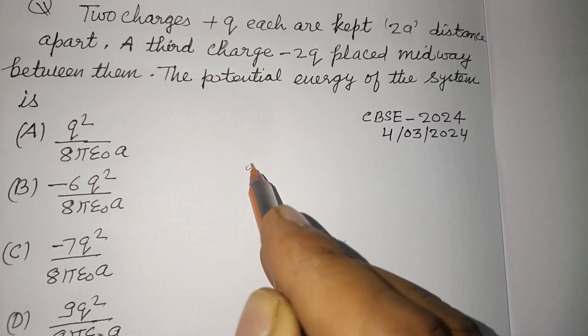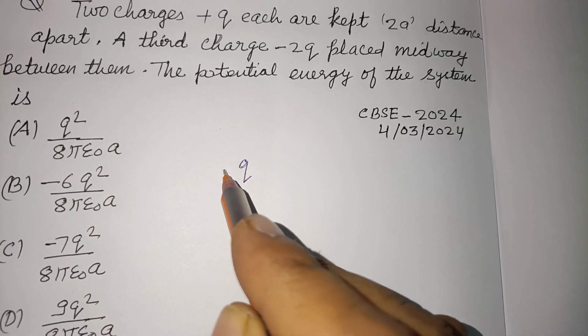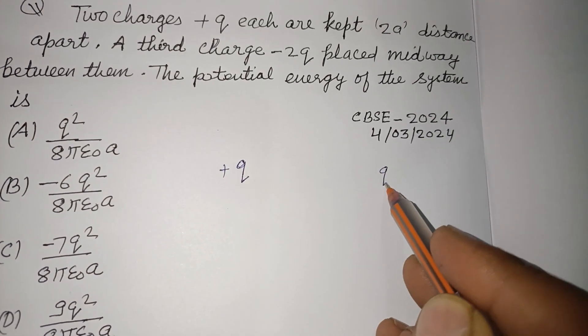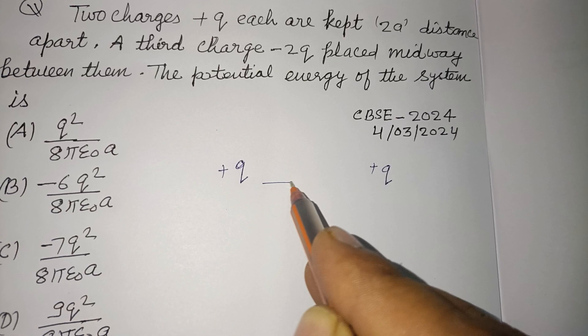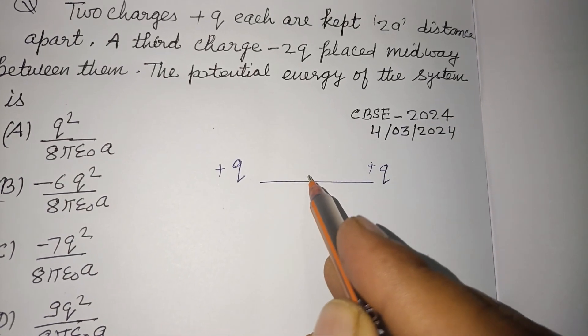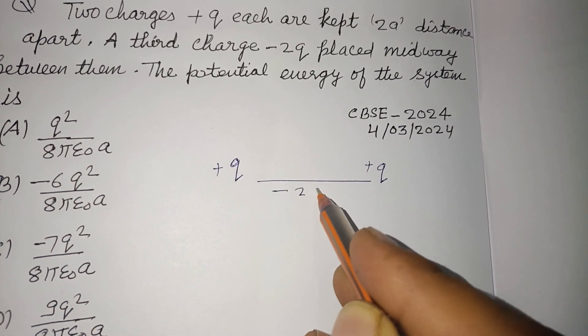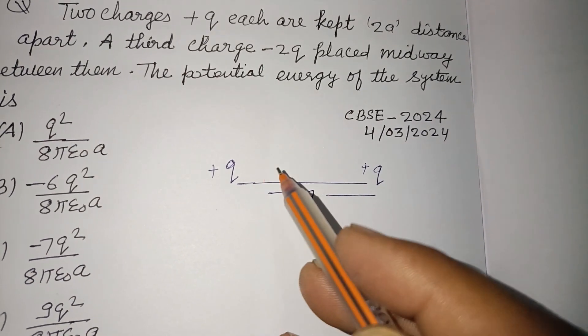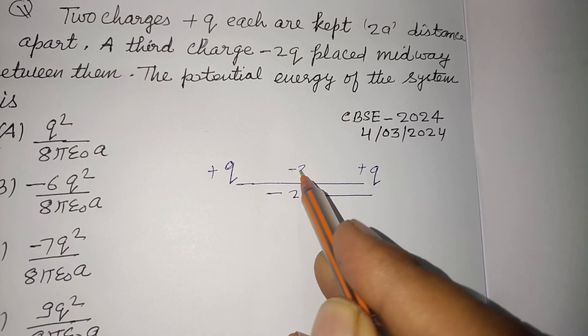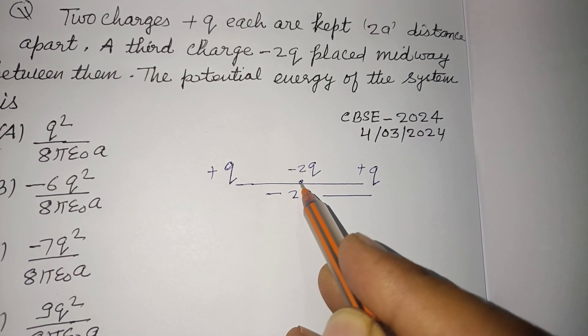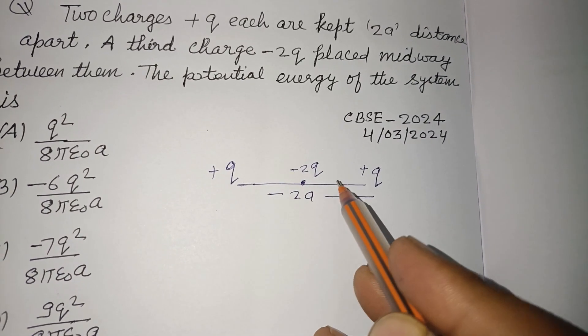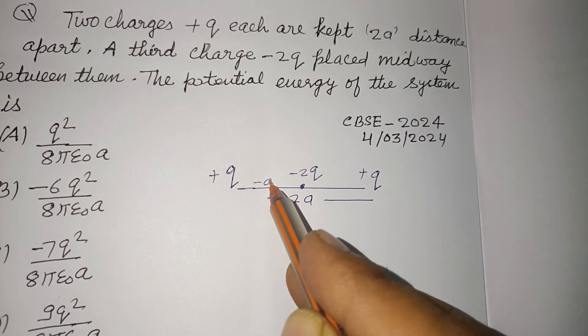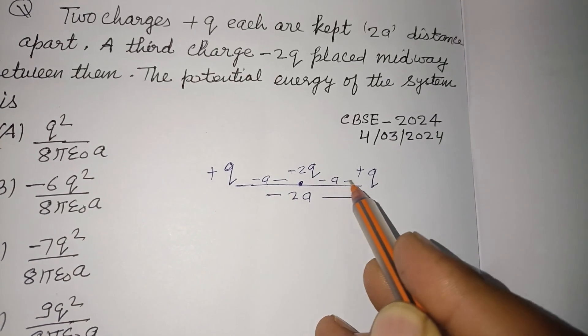So students, here are two charges +Q and +Q at a distance of 2A. And a third charge -2Q is placed between them. So this distance is A and this distance is A.